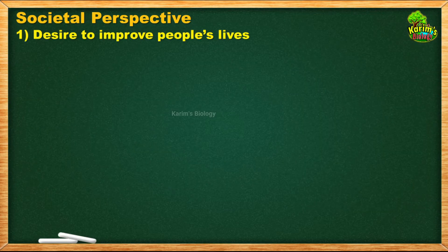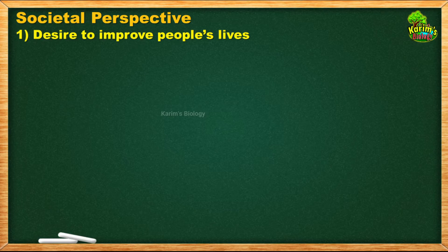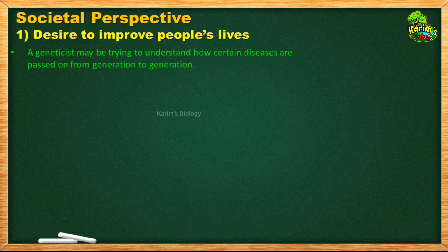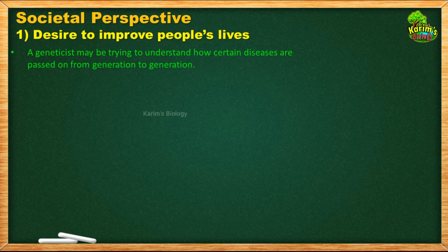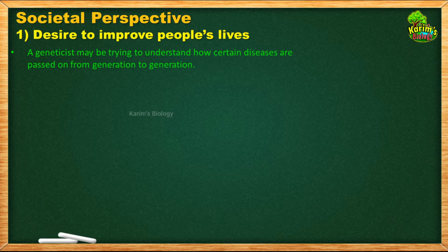First, let us look at the desire to improve people's lives. Every person in society wants to live happily and lead a comfortable life without health issues. Many people on this planet suffer from diseases transmitted from generation to generation, such as thalassemia, cancer, and leukemia. If you understand how these diseases are transmitted, you may be able to protect babies from getting them. The government may pay geneticists to study and understand how diseases are transmitted from person to person or generation to generation, so they can find a solution.